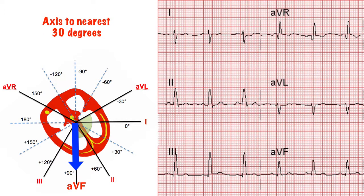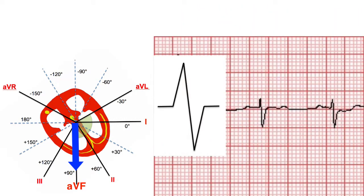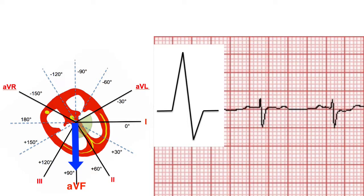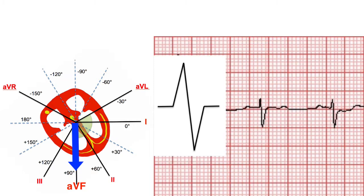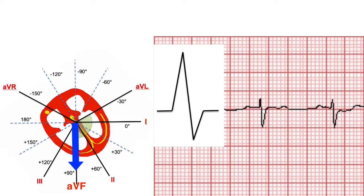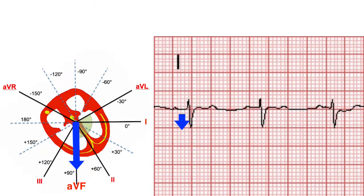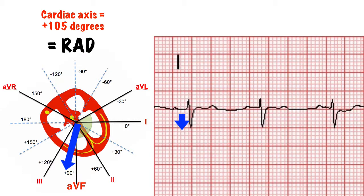This gives us the axis to the nearest 30 degrees, which is fine if the axis is grossly normal or grossly abnormal, but if it's near the limits, like this, we need to be a bit more accurate. Go back to the equiphasic lead. Is it truly equiphasic — equally positive and negative — or is it slightly more positive or slightly more negative? If it's truly equiphasic, then you've found your axis. If it's slightly more positive, you can shift the axis by 15 degrees towards the equiphasic lead. In this case it's slightly more negative, therefore you can shift the axis by 15 degrees away from the equiphasic lead. This patient has right axis deviation.